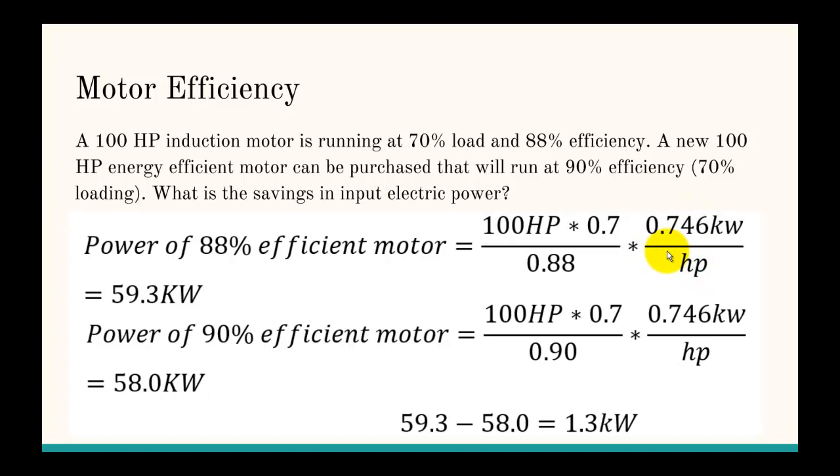So you get 59.3 kilowatts is what the original motor uses, and then you look at the 90% efficient motor. It's not that big of a jump in efficiency, so you actually drop your power usage to 58, and it's asking what is the savings in input electric power. So you have to subtract the two, which is 1.3 kilowatts.